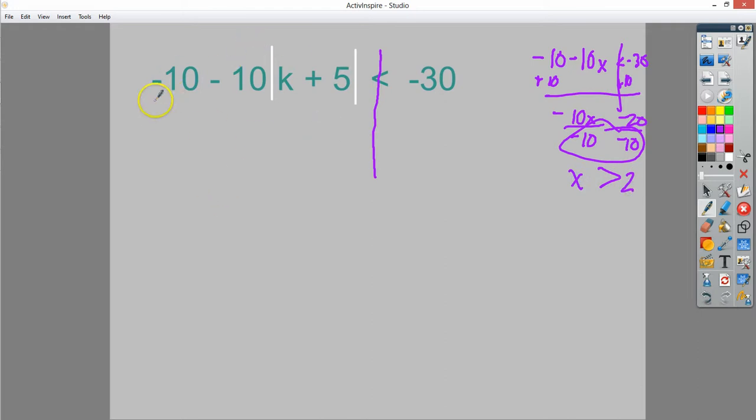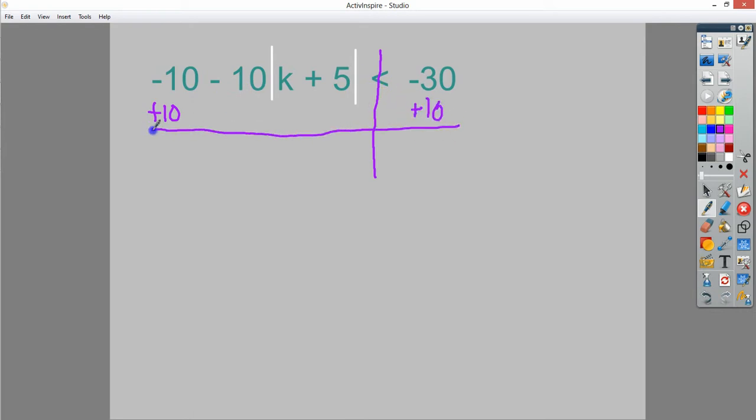So what I'm going to do is add 10 to both sides. Since it's negative 30, and I'm going in the positive direction, this becomes negative 20. I bring down my negative 10 times the absolute value of k plus 5.